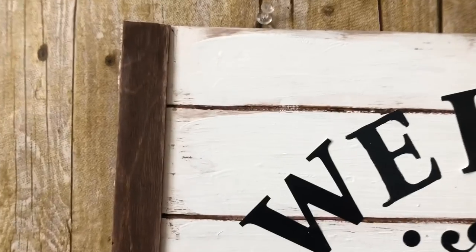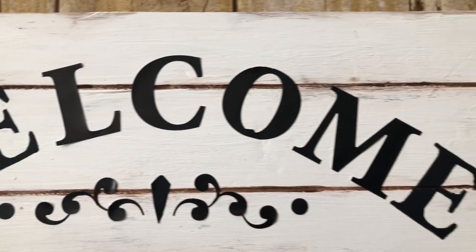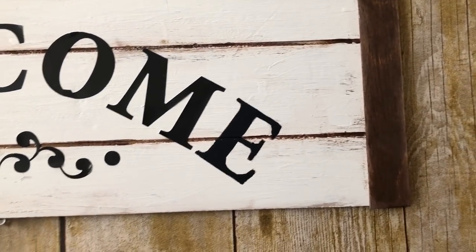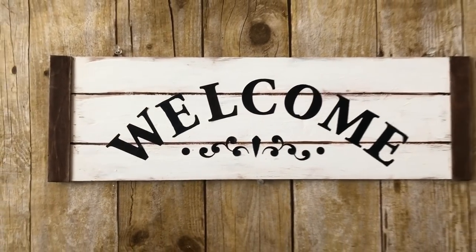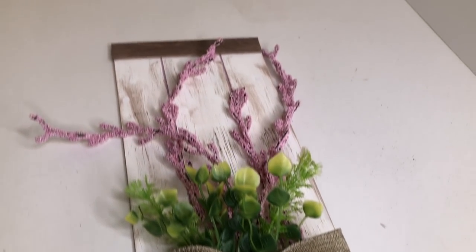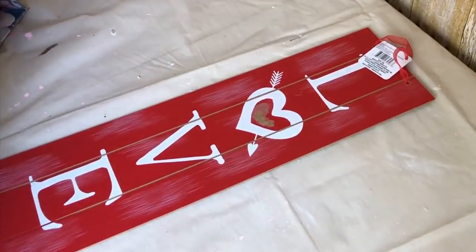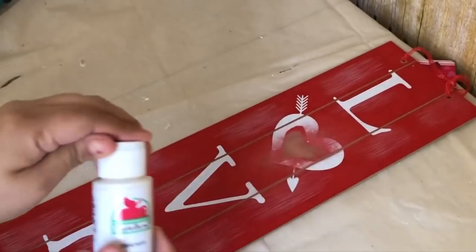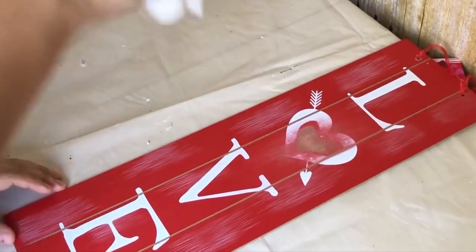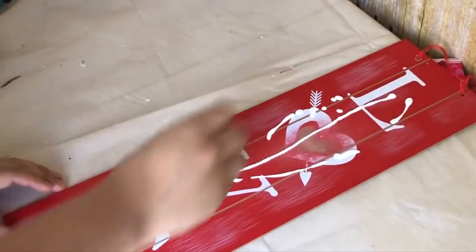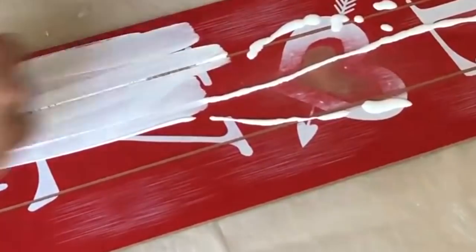My second DIY is this welcome sign. For this project, I'm going to repurpose this DIY I did back in January. I'm going to show you an old clip on how I made it and what I used. I used the love sign from Dollar Tree and I gave it three coats of paint because of the red.